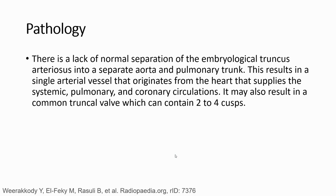There is a lack of normal separation of the embryological truncus arteriosus into a separate aorta and pulmonary trunk. This results in a single arterial vessel that originates from the heart, supplying the systemic, pulmonary, and coronary circulation. It may also result in a common truncal valve, which can contain two leaflets.